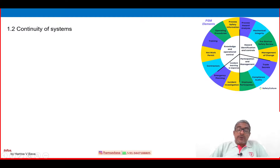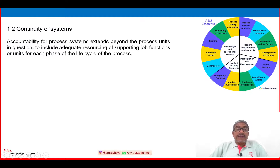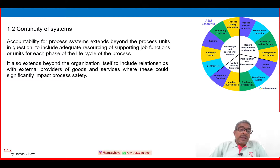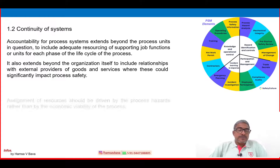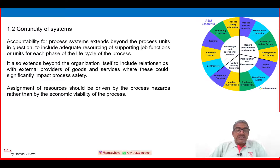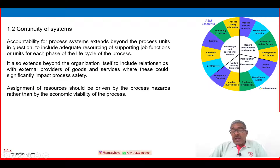Sub-element 1.2 is Continuity of Systems. Accountability of process systems extends beyond the process unit itself to include adequate resourcing of supporting job functions for each phase of the process life cycle. It also extends to relationships with external providers of goods and services where they could significantly impact process safety. Resource assignments should be driven by process hazards rather than by the economic viability of the process.